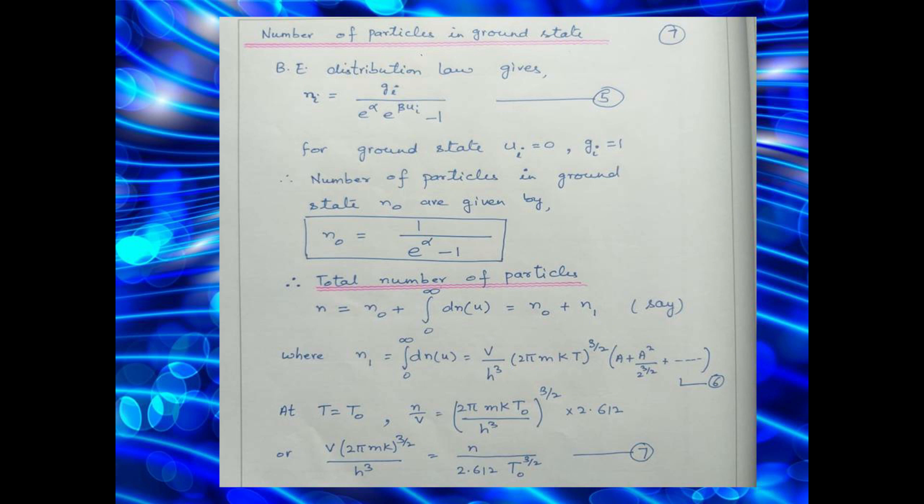The total number of particles in the system is N equal to N0 plus 0 to infinity dNu, which is equal to N0 plus N1. This we have already done in the expression for Bose-Einstein distribution law, how the particles are distributed among different energy levels. Now N1 here is equal to 0 to infinity dNu, the second term in the above relation. At temperature T equal to T0, that is the critical temperature, we have the expression for particle density N by V. From here we can evaluate the term V into 2 pi Mk raised to power 3 by 2 over H cube as shown in equation number 7.